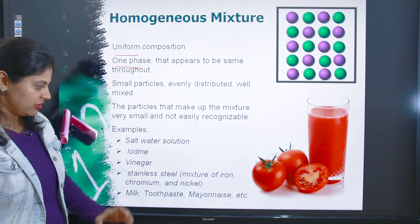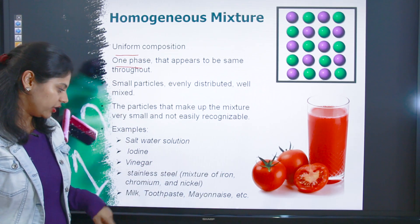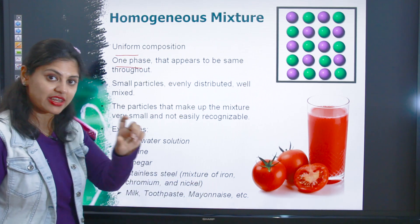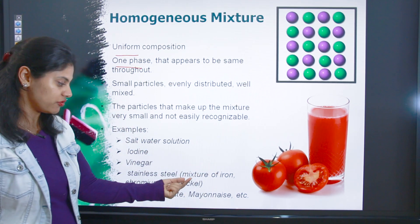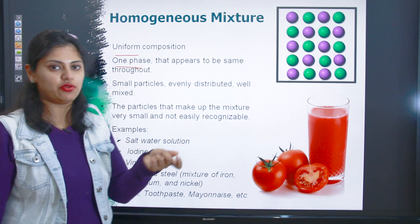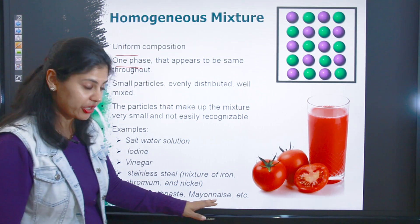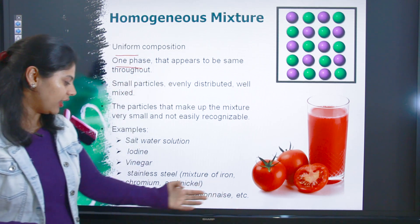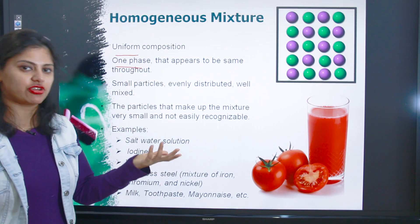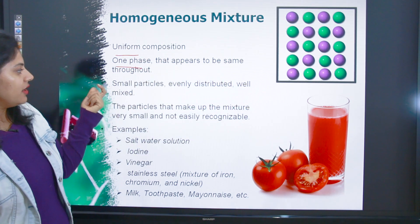Examples of homogeneous mixtures: salt water solution — salt ko paani mein mix karo to aap dekhoge ki ek clear solution ban jaega. Iodine, vinegar — jo aap normal gharon mein dekhte ho. Stainless steel — a mixture of iron, chromium, and nickel — jab hum dekhte hain to hum sirf steel kehte hain. Milk, toothpaste, mayonnaise jo hum sandwich mein use karte hain — ye sab homogeneous mixtures ke examples hain.